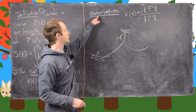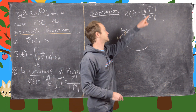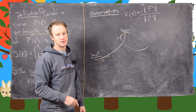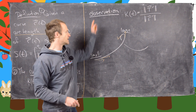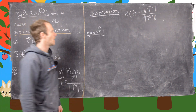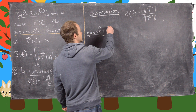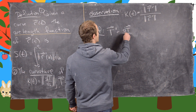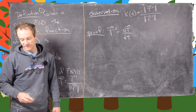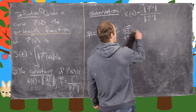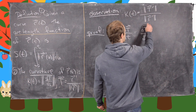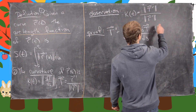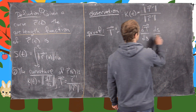Now we're going to prove this observation, which says that the curvature is the magnitude of the unit tangent vector prime divided by the magnitude of the tangent vector itself. The first thing we notice is that capital T prime, also denoted dT by dt, is given via the chain rule by dT by ds times ds by dt, where s is that arc length function.